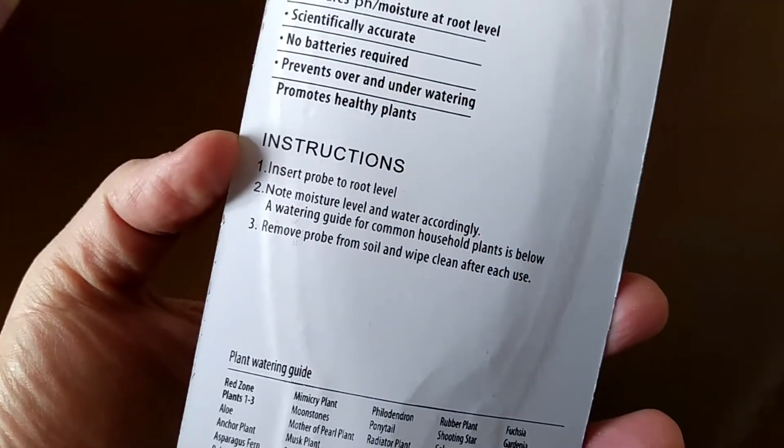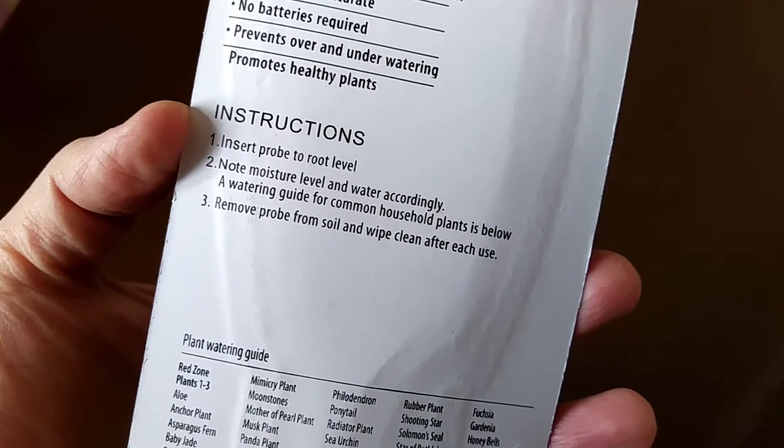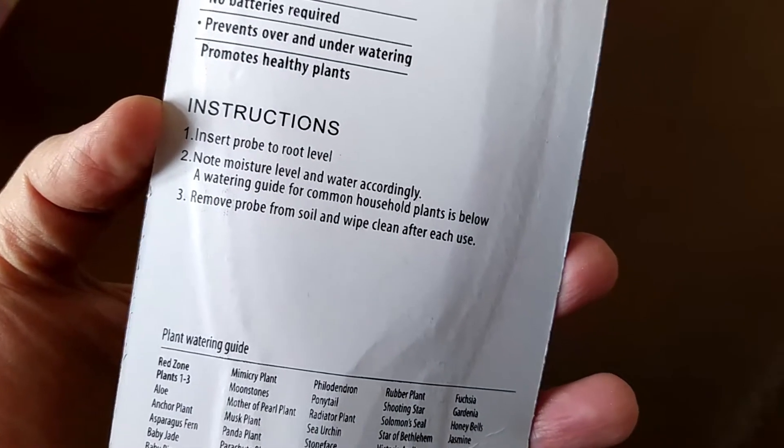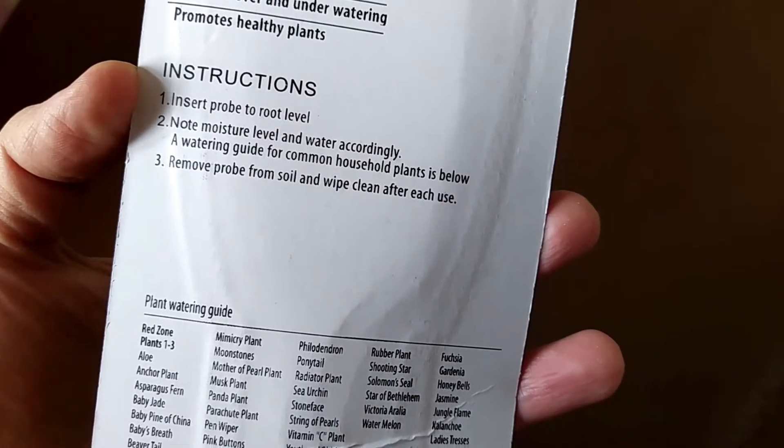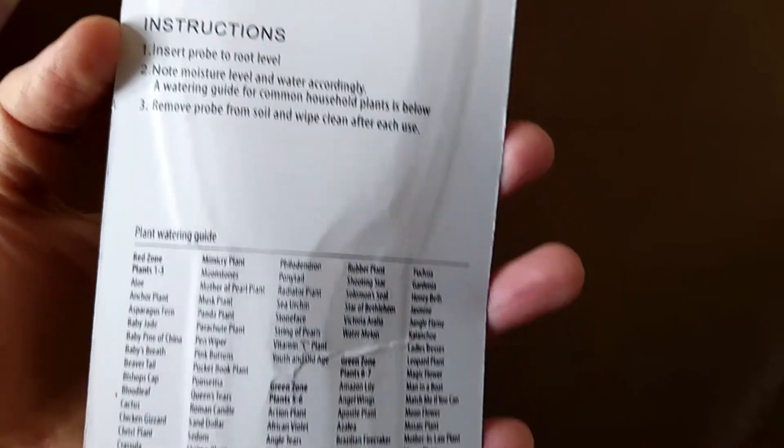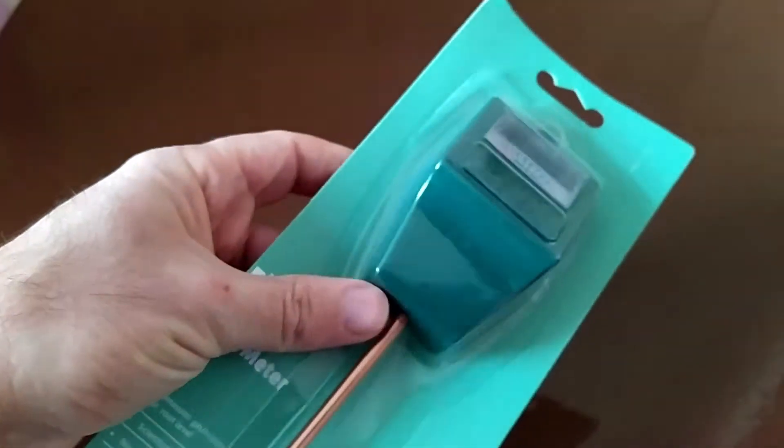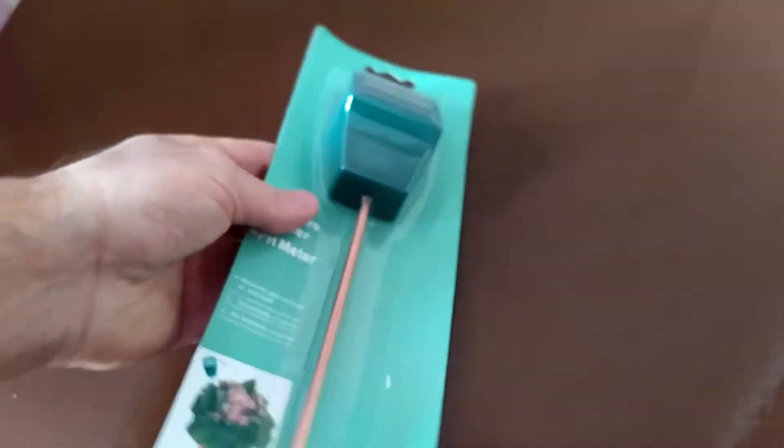So we have instructions here: insert the probe to the root level, note moisture level and water accordingly. Watering guide for common house plants is below and this is it. So we're gonna test this and see how it's working.